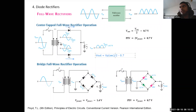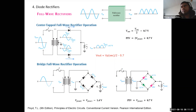What will be the PIV rating of this one? Now think about a reverse bias situation. Consider you are looking at this half — when D2 diode is conducting, D1 is not conducting. It is reverse biased.